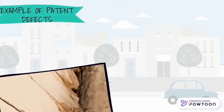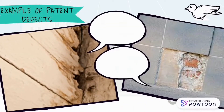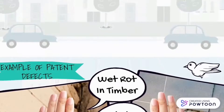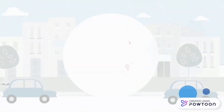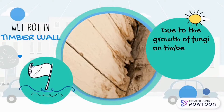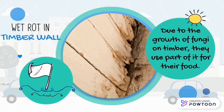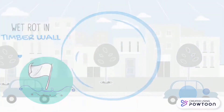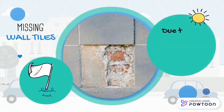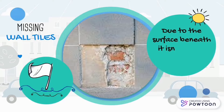Examples of patent defects include wet rotten timber and missing tiles. Wet rotten timber on a wall is due to the growth of fungi on timber being used as part of their food source. Missing tiles occur because the surface beneath them is not stable enough.